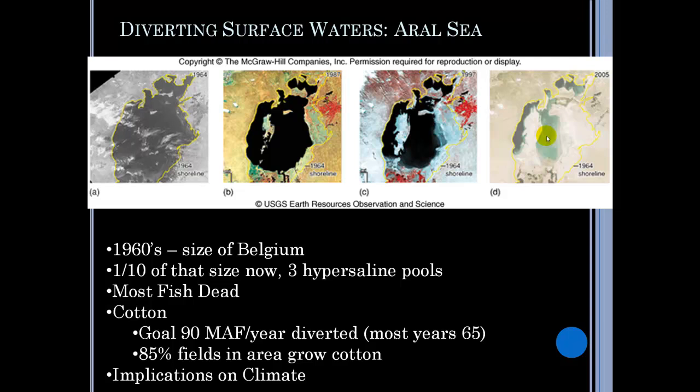This area used to support many different species of sturgeon — I believe there's no sturgeon left in the entire sea. There are some fish species in the upper area, but for the most part there's nothing. And cotton is the reason for this. Countries like Kazakhstan and Kyrgyzstan are still engaging in diversion to grow cotton because they really don't know any other way of life — they can't go back to fishing because there are no fish left. In terms of local climate, it's getting difficult to grow cotton because the sea used to buffer the climate, but now with the sea gone, you have much hotter summers and much colder winters, and the cotton crop is largely failing.